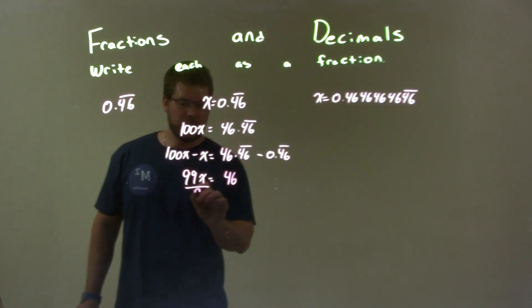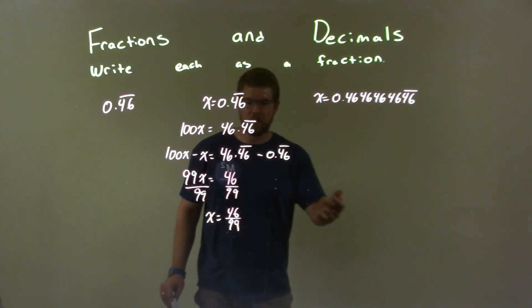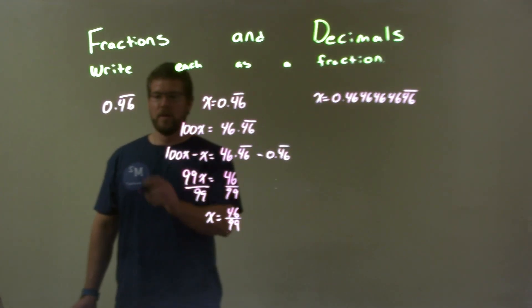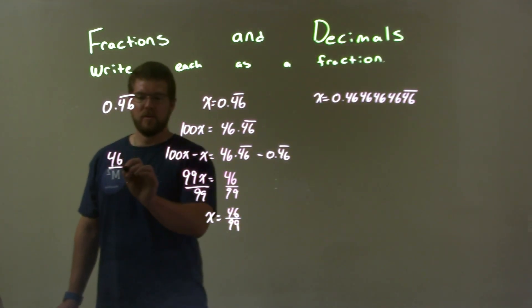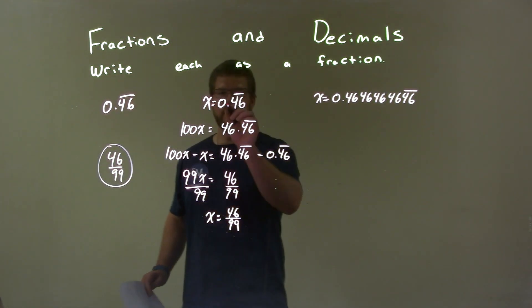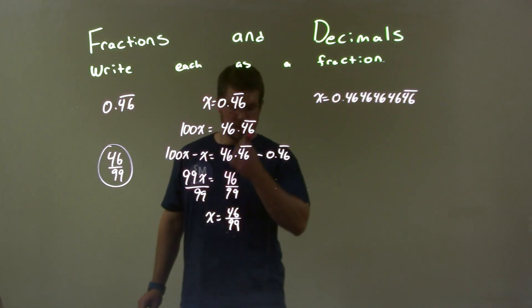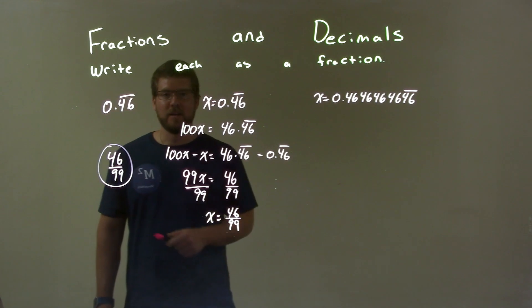Well, to solve for x, I divide 99 to both sides, and I'm left with x equals 46 over 99. That fraction can't be simplified, it's in the simplest form. That's our final answer because if x equals 0.46 repeating, we found that x also equals 46 over 99.